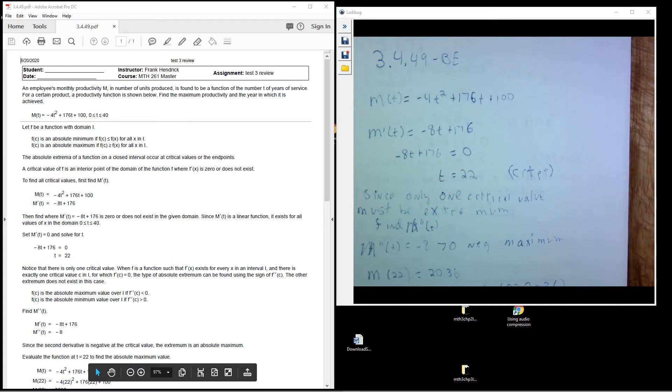Now for this particular problem here, an employee's monthly productivity M, in the number of units produced, is found to be a function of the number T of years of service. So the productivity is related to the service here. For a certain product, a productivity function is shown below. Find the maximum productivity and the year in which it is achieved.